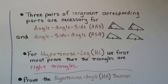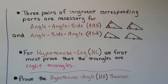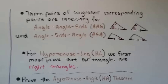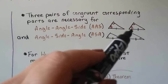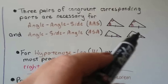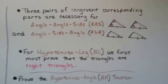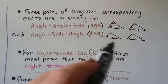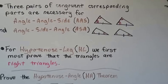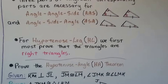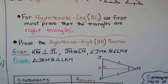Three pairs of congruent corresponding parts are necessary for Angle-Angle-Side, AAS — a pair of angles congruent, another pair of angles congruent, and those sides congruent. For Angle-Side-Angle, we would also need three pairs. For Hypotenuse Leg, HL, we first must prove that the triangles are right triangles.